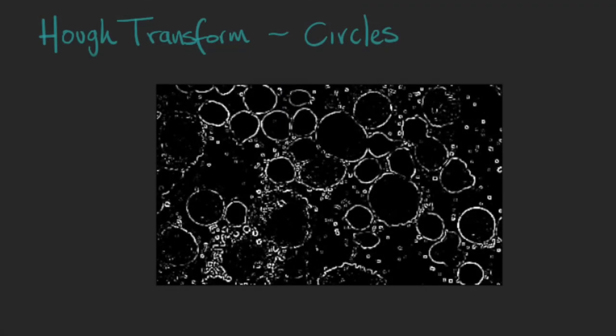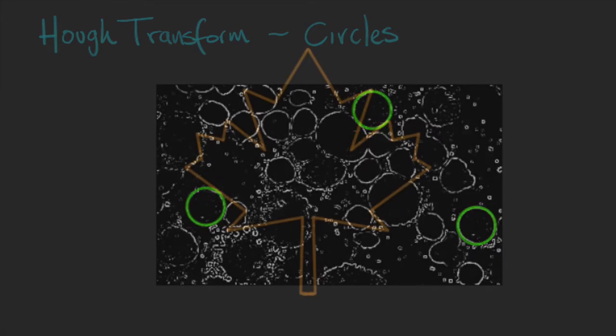In the previous video we reviewed the algorithm to fit shapes that can be described with a specific equation, but sometimes we don't have such a thing. For example, imagine that you want to find this shape in your image.